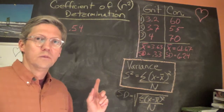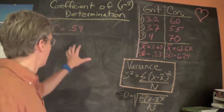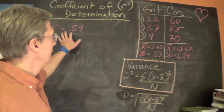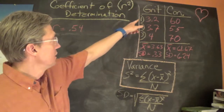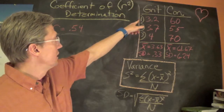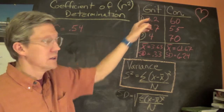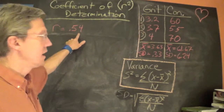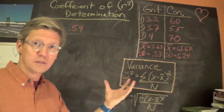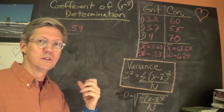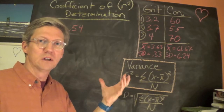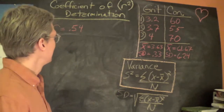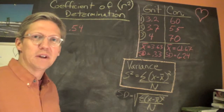We've gotten our correlation coefficient between the grit score and the conscientiousness scale of 0.54 — a positive correlation between the two, moderate in strength. But now let's look at the coefficient of determination.